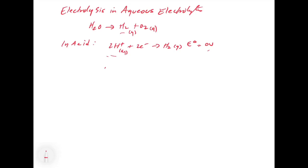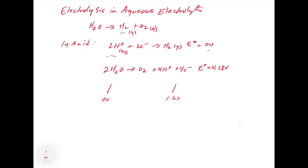The upper limit is where we take water and oxidize it to make O₂ gas + 4H⁺ + 4e⁻. These reactions are in the table of standard reduction potentials, and the potential for this oxidation is 1.23 volts. So our electrochemical window runs from 0 volts to 1.23 volts — above 1.23 volts we make oxygen gas, and below zero volts we make hydrogen gas.